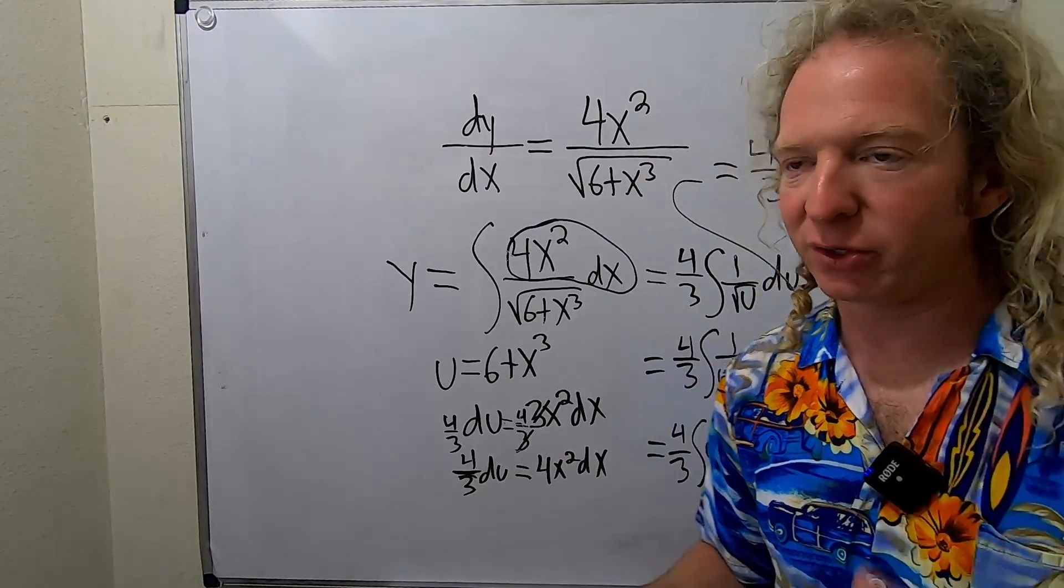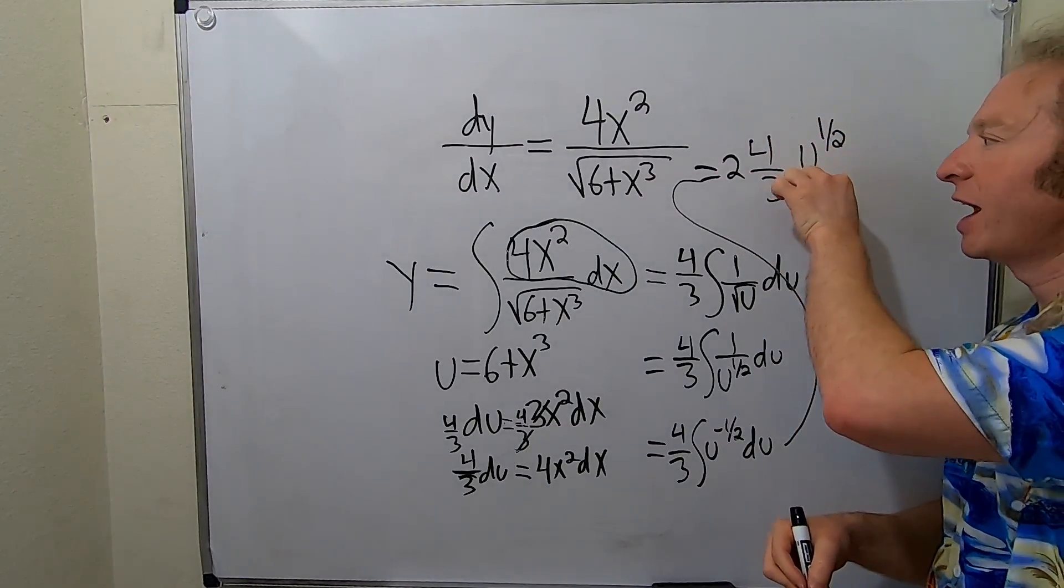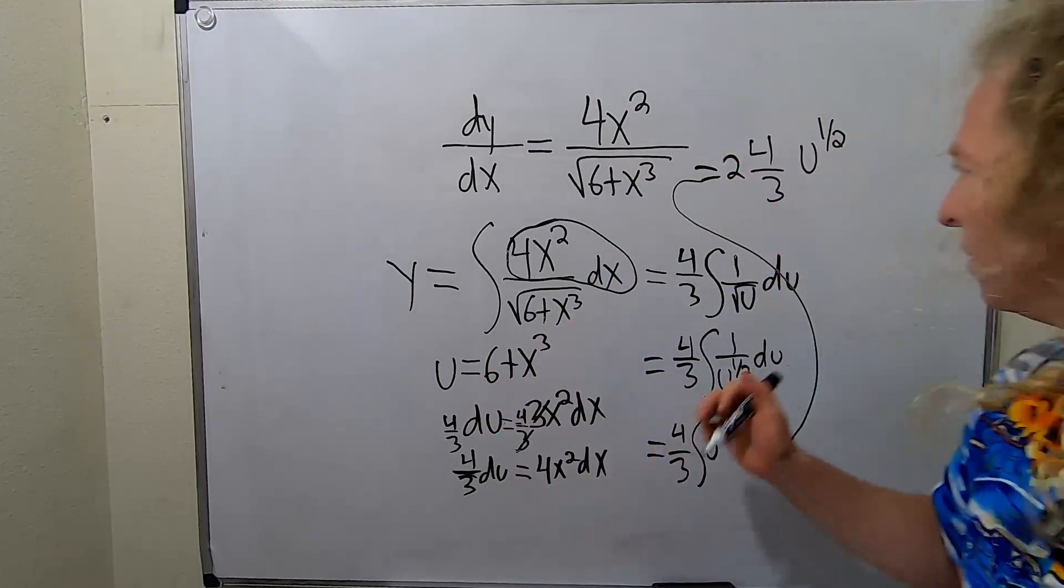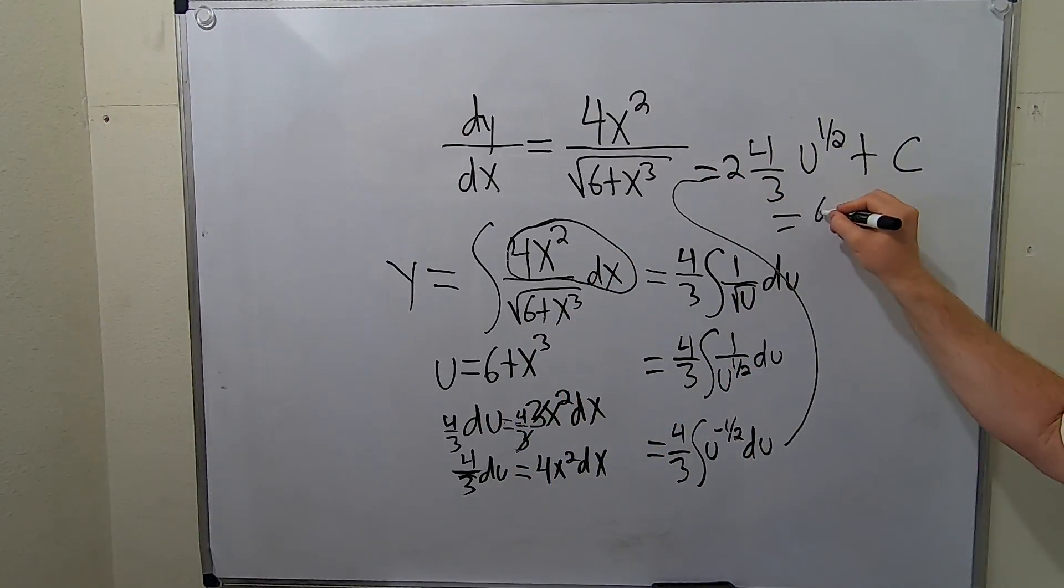And when you divide by 1 half, you really multiply by 2. So I'm going to go ahead and put a 2 out here. Again, when you divide by 1 half, you really multiply by the reciprocal of 1 half, which is 2. So now we have our plus c here. This is 8 thirds. Good stuff.